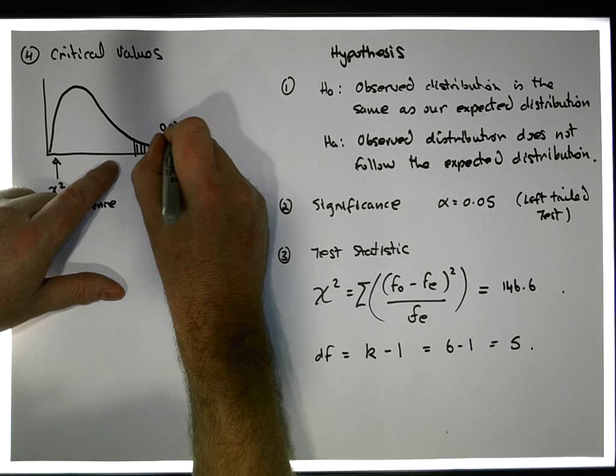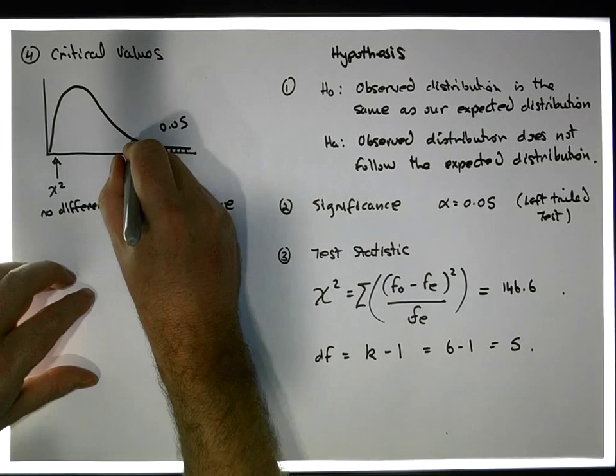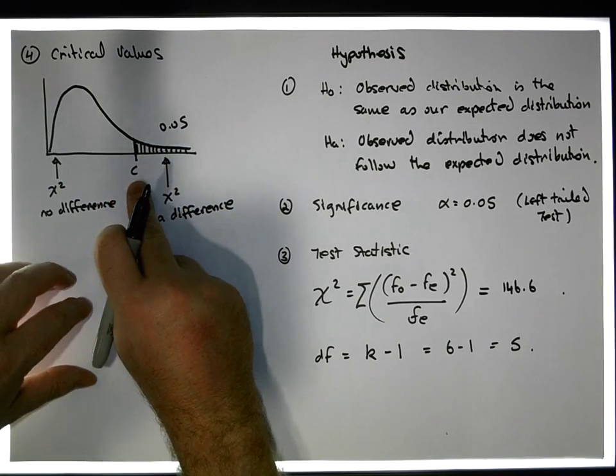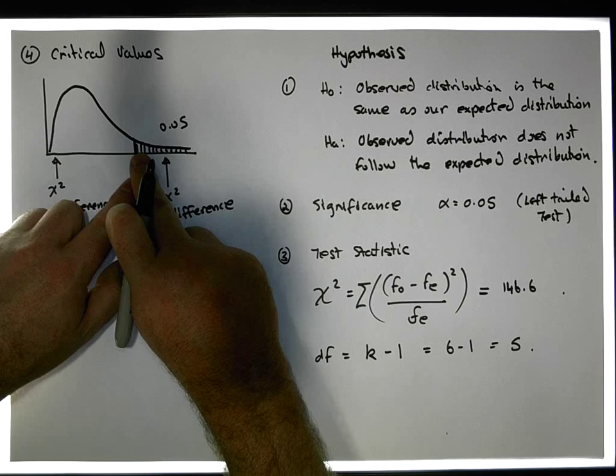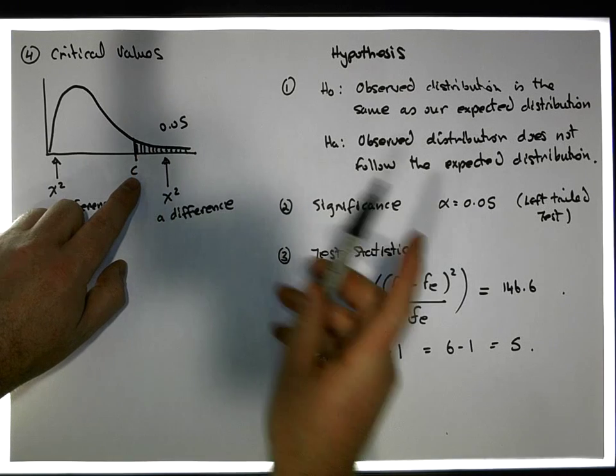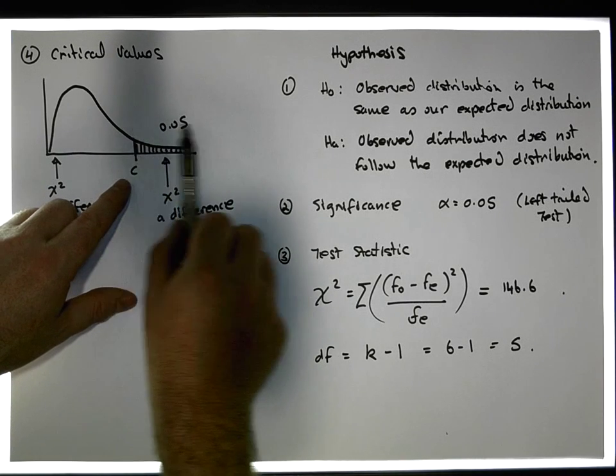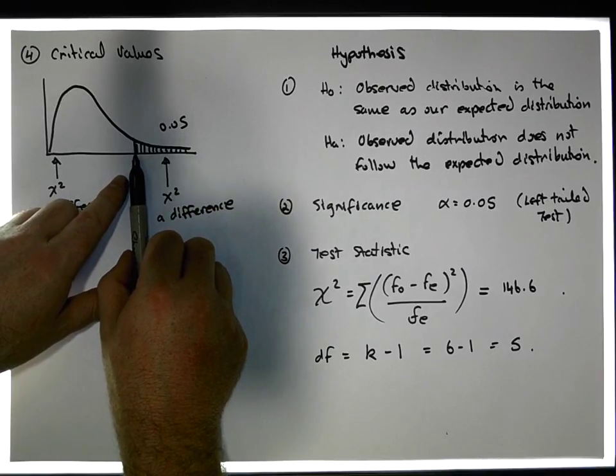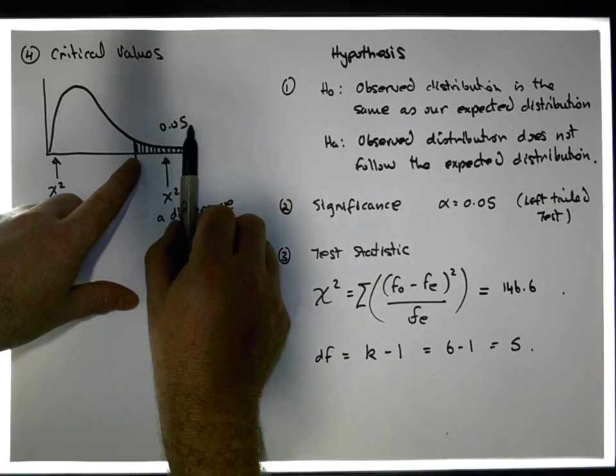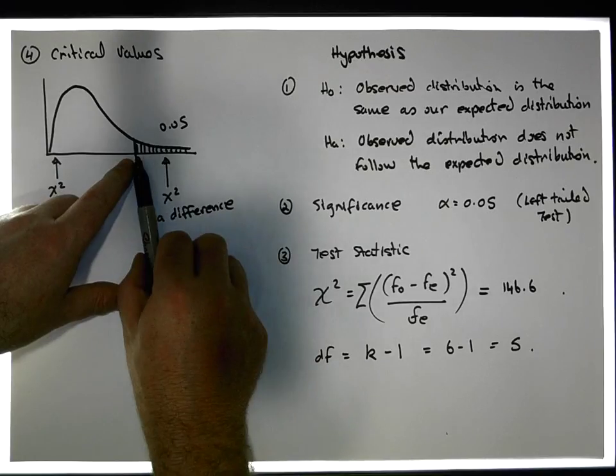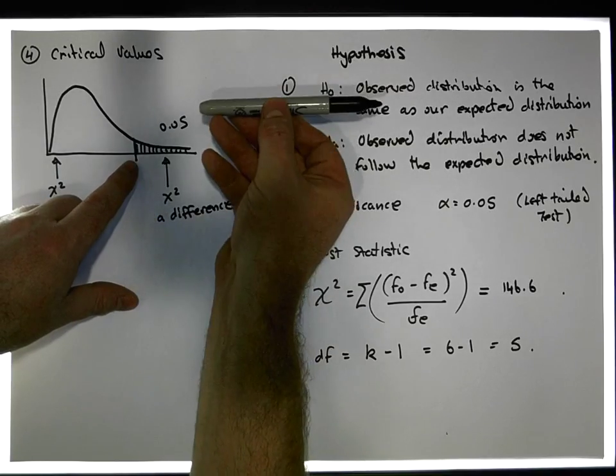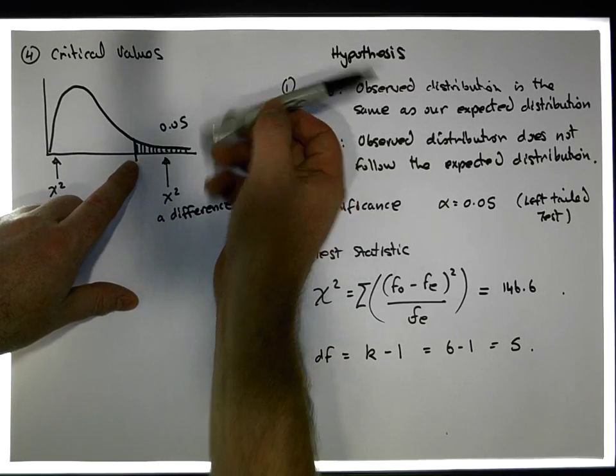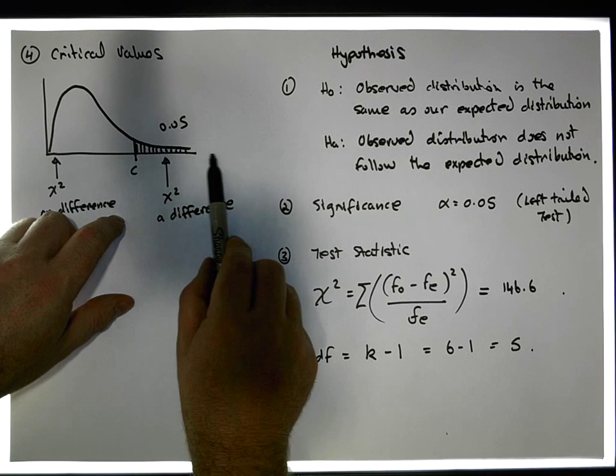I'm going to put down here 0.05 of the area, and the question that I have now is what is that critical value that has 0.05 of the area to the right hand side? Because test statistics that occur in this particular portion occur with a probability of at least 0.05, because that's the area to the right hand side of this particular value.